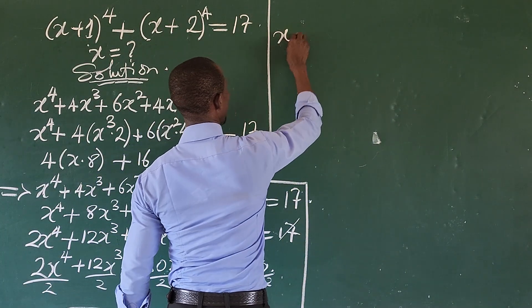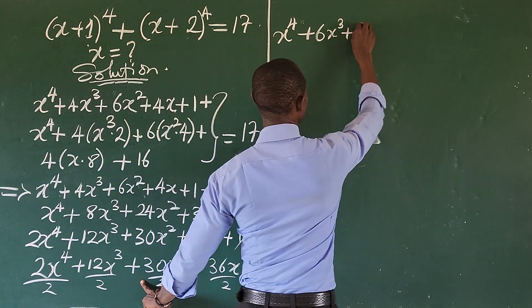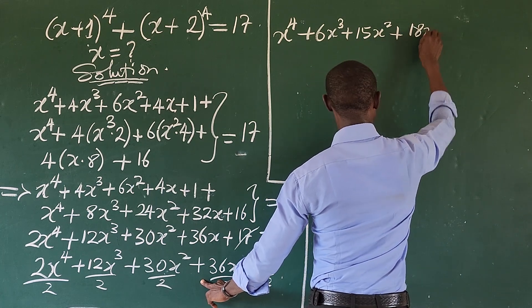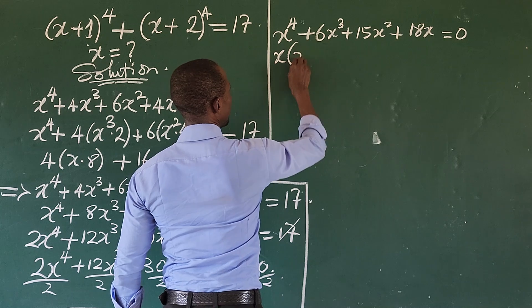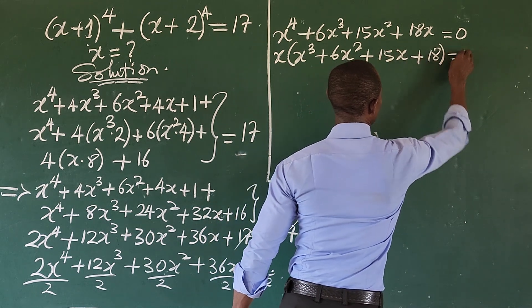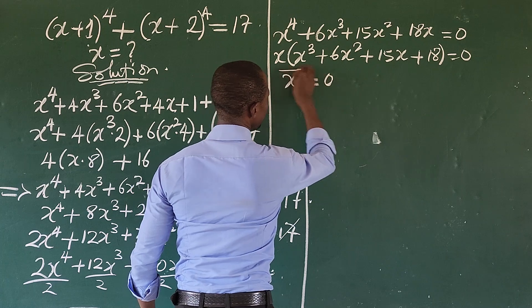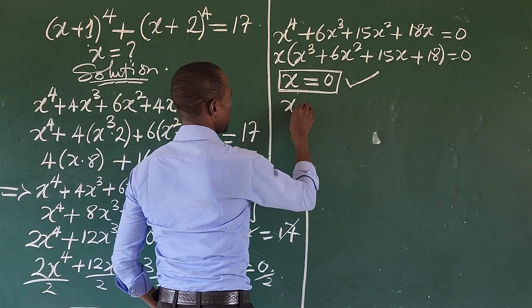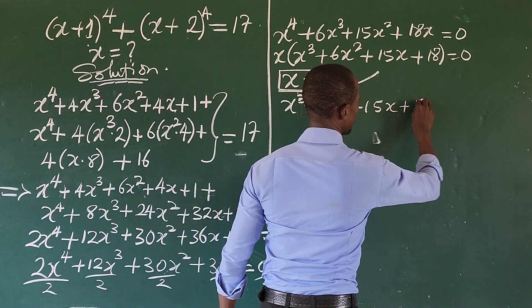After dividing by 2, we have x to the power of four plus 6x to the power of three plus 15x to the power of two plus 18x equal to 0. Now x is common to both sides, so let's factor x out. We are left with x times the quantity x to the power of three plus 6x squared plus 15x plus 18, equal to 0. Applying the zero product rule, we equate each factor to 0, giving us x equals 0 as the first answer.